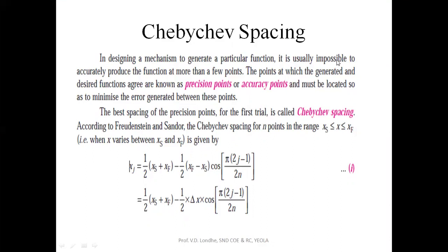The best spacing of these precision points for the first trial is given by the Chebyshev spacing method. The formula gives the precision points where x is the range: xs is the starting point, xf is the finishing point, and the difference between the finishing and starting gives you the range of the precision points — the values which are going to vary for that particular range.